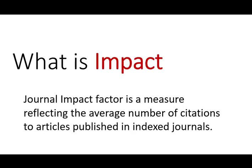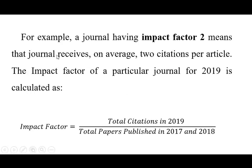Journal impact factor is a measure reflecting the average number of citations to articles published in an indexed journal. Indexed journals are those indexed in the Web of Science indexing agency. For example, a journal having an impact factor of 2 means that journal receives on average 2 citations per article. The impact factor for 2019 is calculated as total citations in 2019 divided by total papers published in 2017 and 2018.